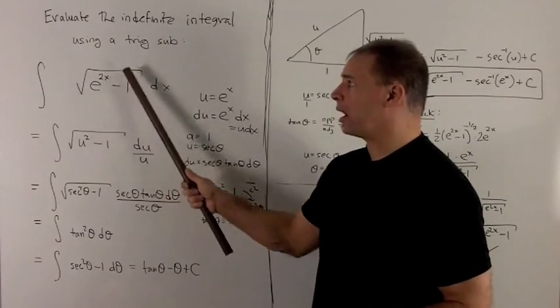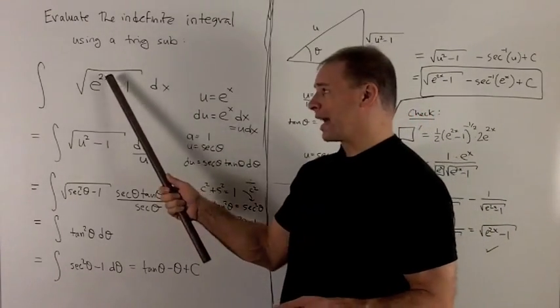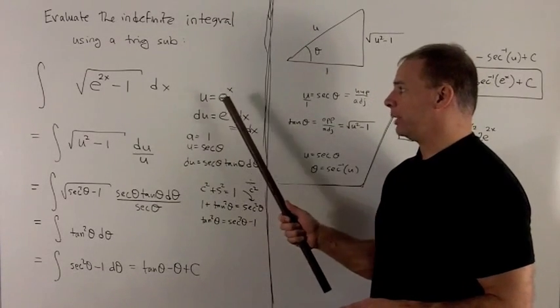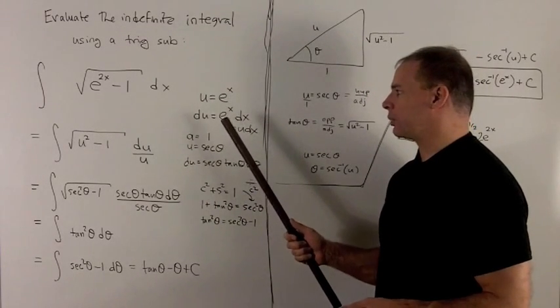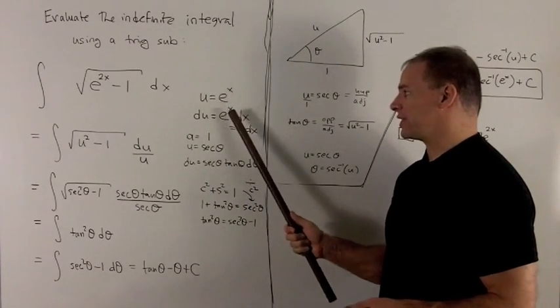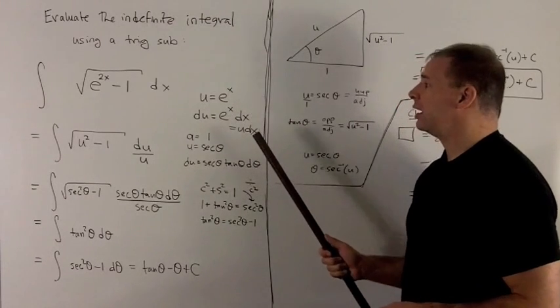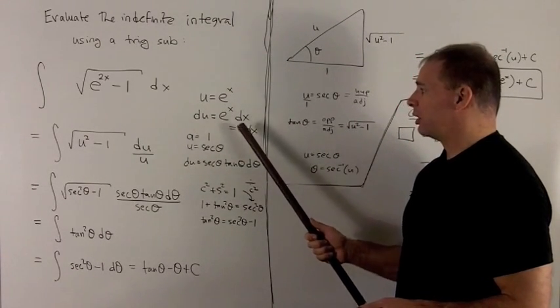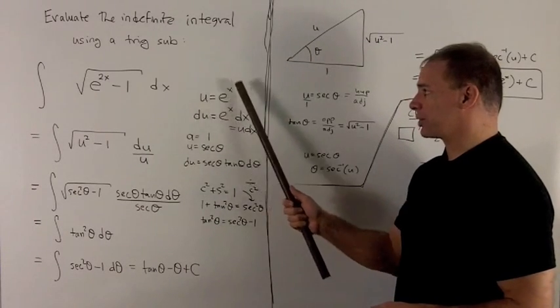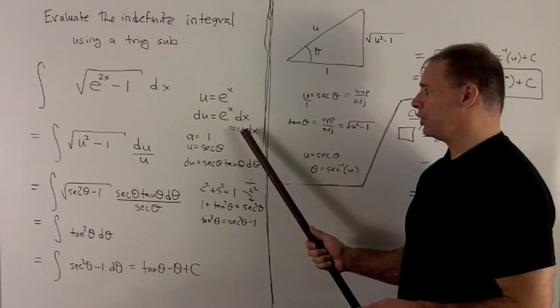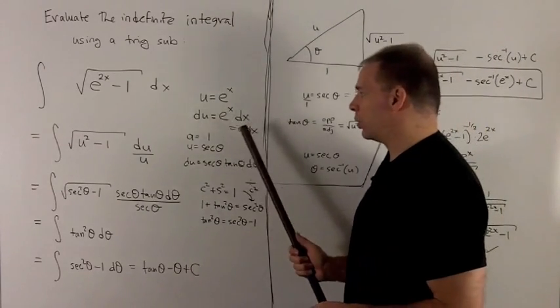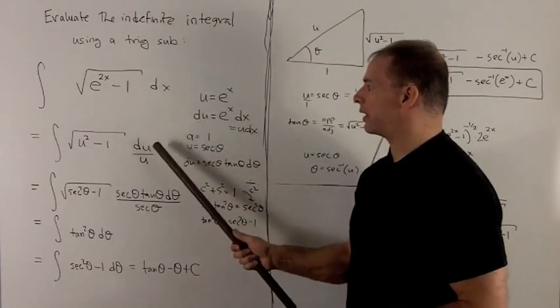We note here we want this to be a square, and we're already using x for something, so I'll use another letter. I'll go with u. Let u equal e to the x, du equals e to the x dx. It'll be easy to stick in u where I had e to the x. So it's u times dx, and dx is just du over u.